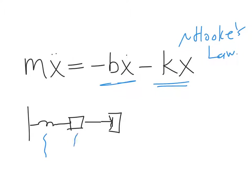Here's our spring, here's our mass, and then we draw something called a dash pot. You want to have in mind the idea that it's just a pot of some sort of viscous goo. There's a piston attached to the mass, and as the mass oscillates back and forth, this piston drags through the goo — that represents the damping term.